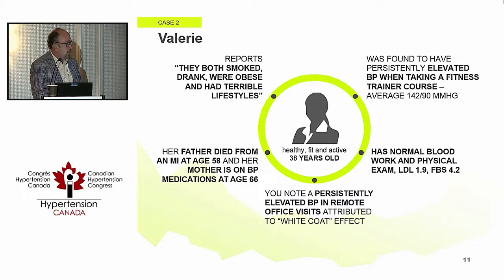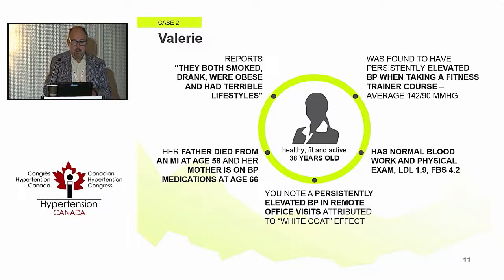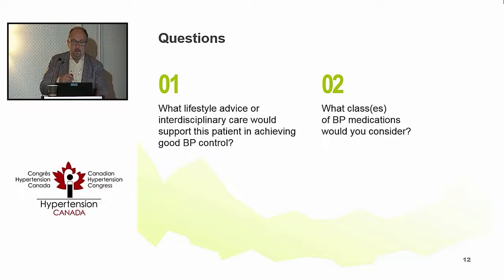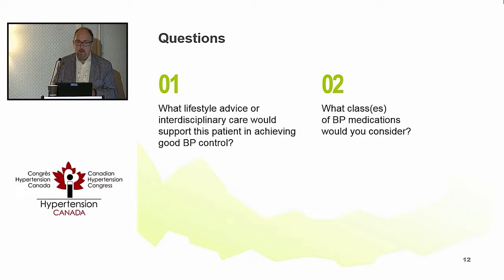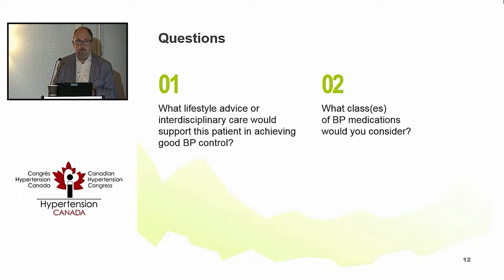There is a family history of MIs at age 58; mother on blood pressure medications at age 66, although both were smokers with bad lifestyles. Blood pressure is in the 140 to 150 range. How many people would start her on medications at this point? How many people wouldn't? One brave soul.